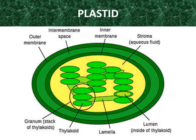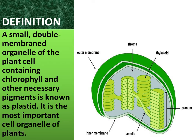Now we will learn about plastid. Here we can see the structure of a plastid. We can see the outer membrane, inter-membrane space, and inner membrane. Then the stroma, which is an aqueous fluid. The lumen is the inside of the thylakoid. Lamella and thylakoid are also present. The granum is a stack of thylakoids. A small double-membrane organelle of the plant cell containing chlorophyll and other necessary pigments is known as plastid.